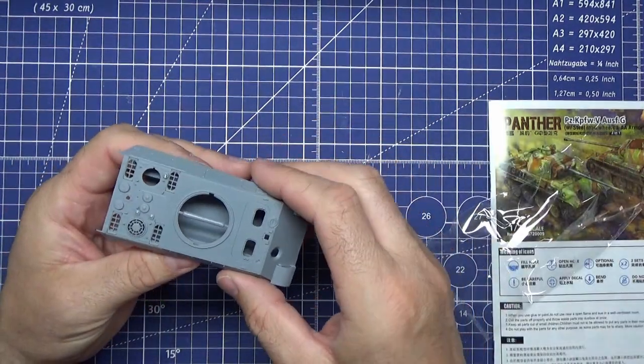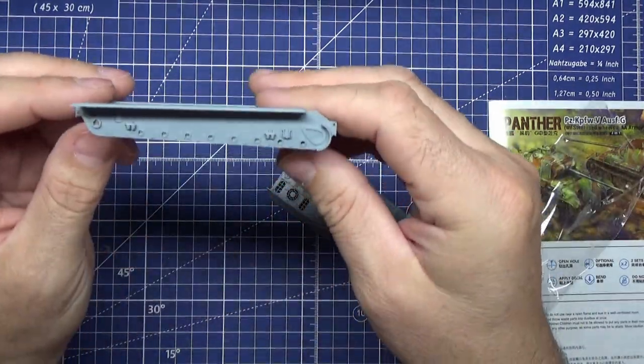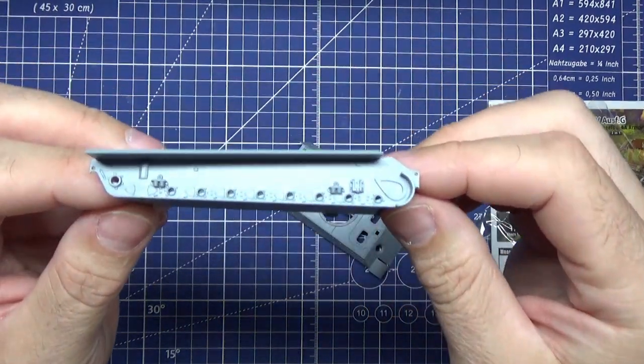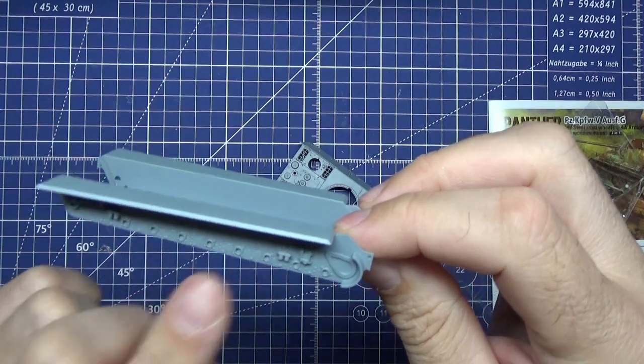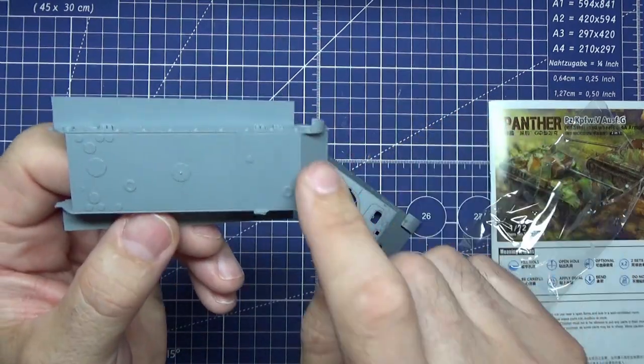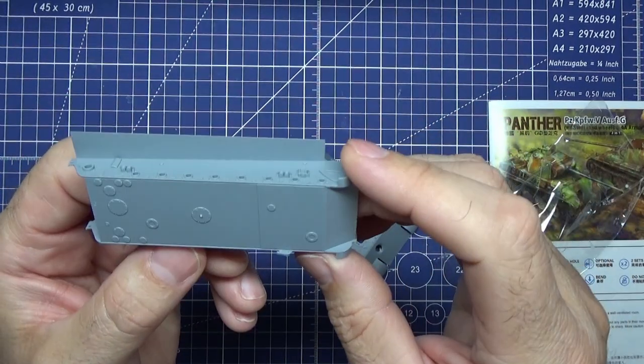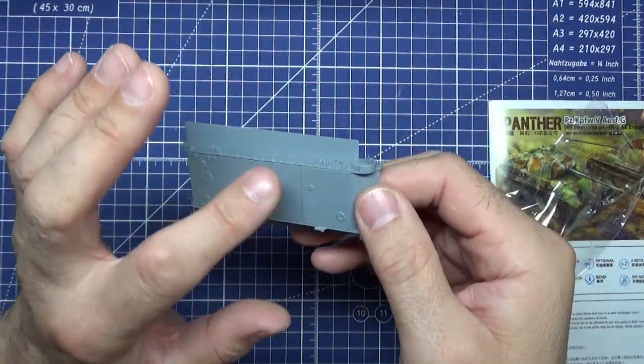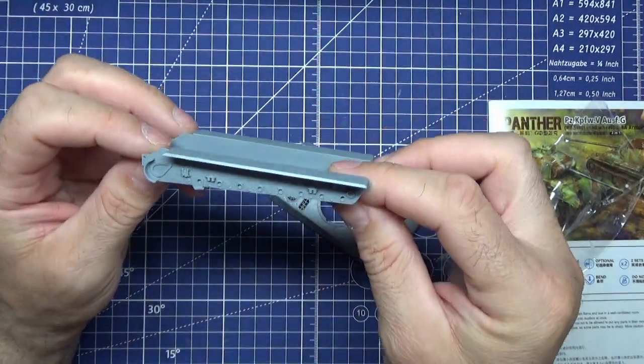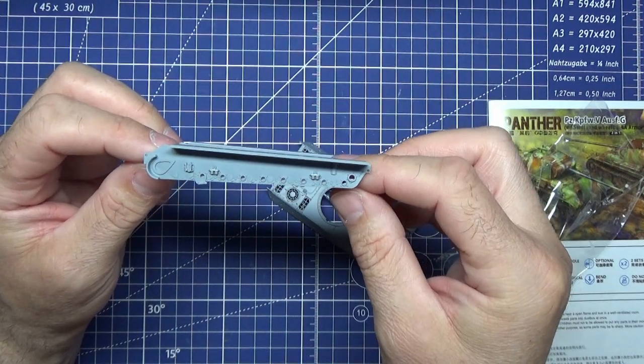First off we've got the lower hull and that's beautifully detailed there. The bottom's detailed as well, so you could have it tipped on each side if you wanted. There's enough detail that you could make out with that, same on the other side.